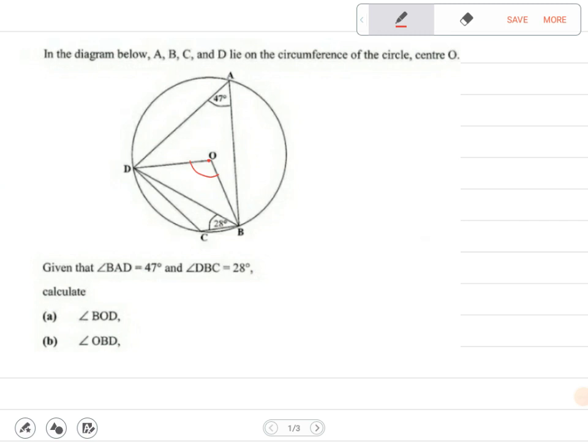There's a principle or circle theorem which states that the angle at the center is twice the angle at the circumference. So the angle at the center is twice the angle at the circumference.